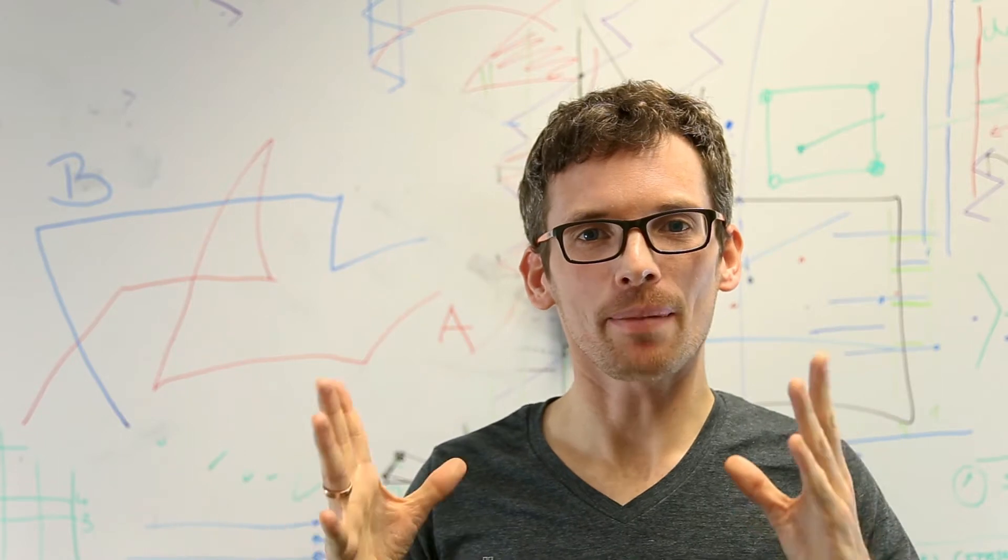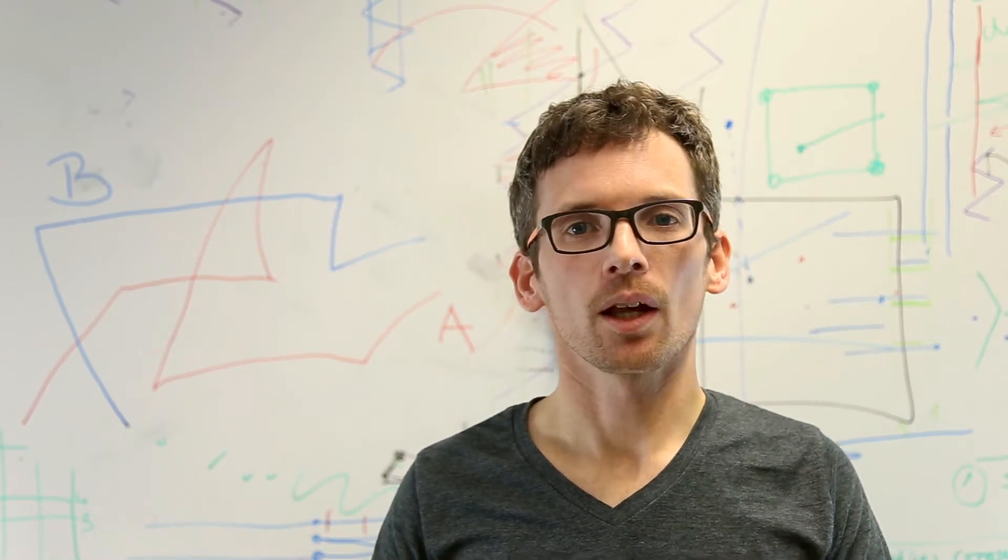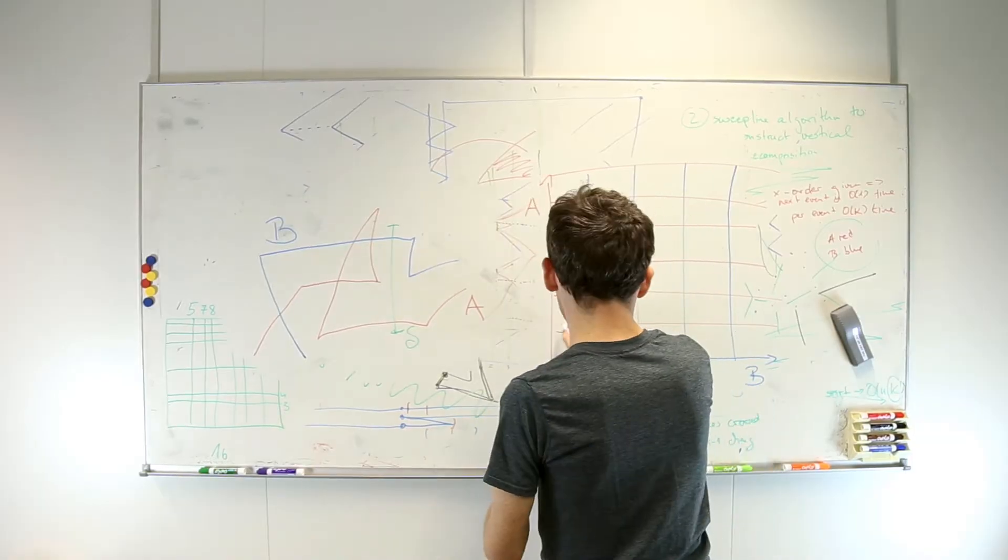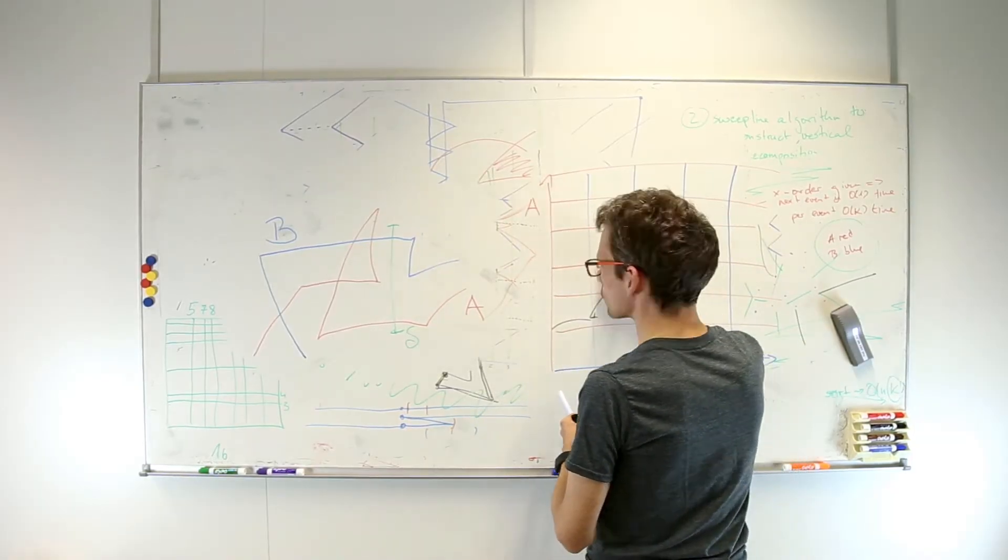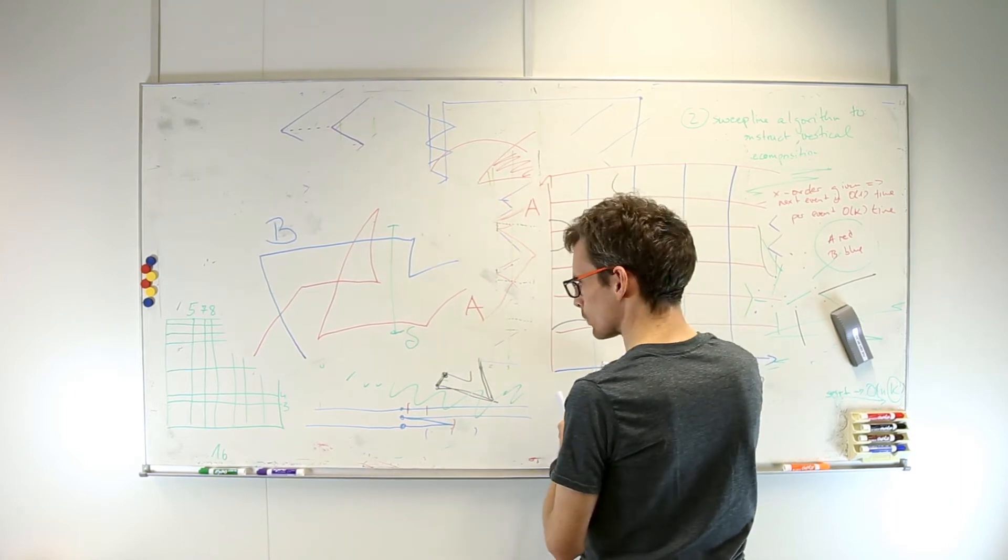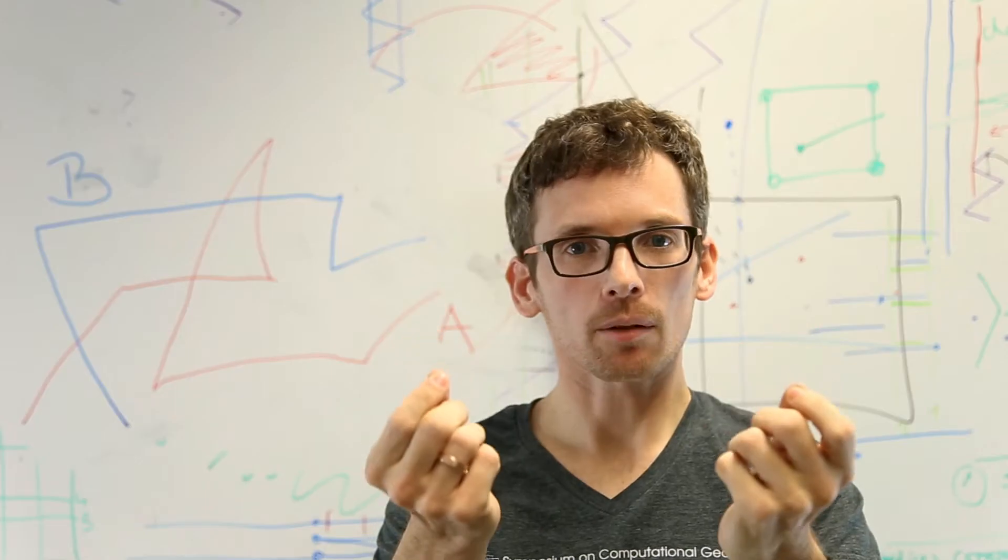To compute the Fréchet distance, we can make use of a free space diagram. For a given distance delta, we draw a two-dimensional diagram where each axis corresponds to the distance traveled along each curve A and B. The free space is the part of the diagram where the distance between the two points is at most delta.